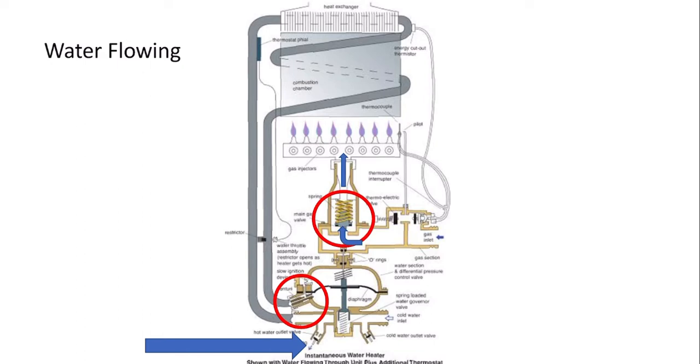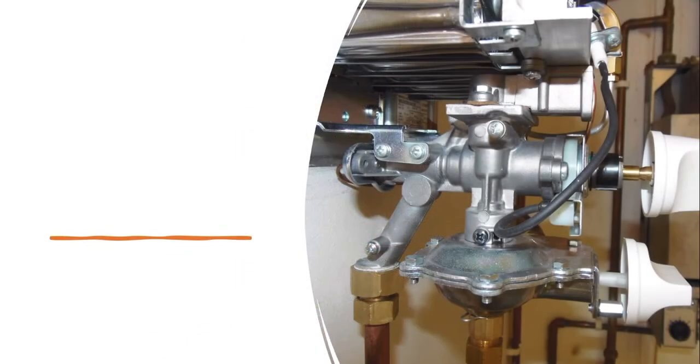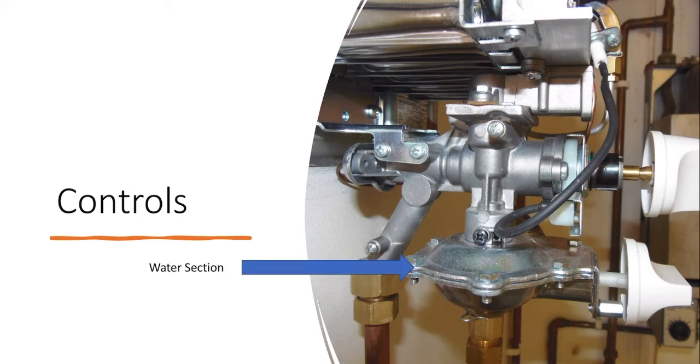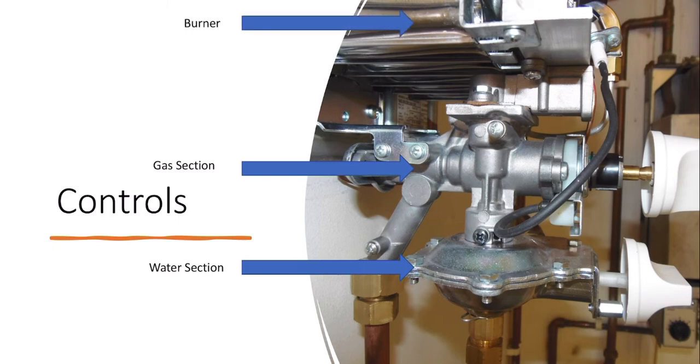Remember, this won't work without the hot tap being turned on. So, what does it look like in reality? This is probably what you're going to be presented with. Down here is the water section with that diaphragm and the slow ignition device. This is the gas section with a gas valve and up here is the burner.